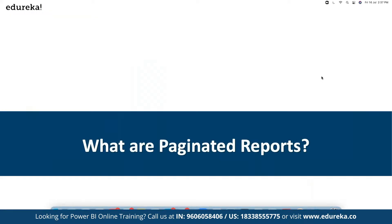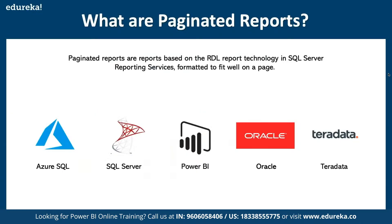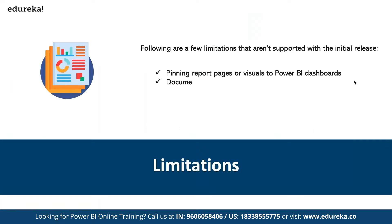We are also going to discuss paginated reports as part of Power BI. Paginated reports are based on RDL report technology from SQL Server, used as part of reporting services, and are formatted to fit well on a page. They support multiple data sources including Azure SQL, SQL Server, and Power BI. There are certain limitations — for example, you cannot pin paginated reports to a Power BI dashboard, document maps are limited, drill-through reports are not available, and shared data sources and shared datasets have restrictions.